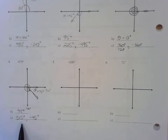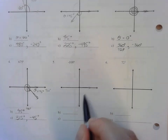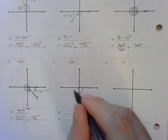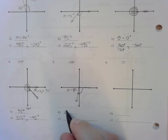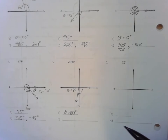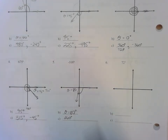Number 5: negative 100 degrees. Starting from the initial side, going clockwise past negative 90 to negative 100. Our reference angle wouldn't be the 10 degrees close to the axis — it would be 80 degrees. To find coterminal angles, adding 360 gives 260 degrees as a positive coterminal angle. Subtracting 360 gives negative 460 as a negative coterminal angle.